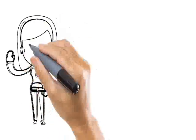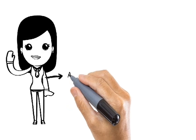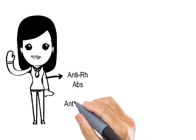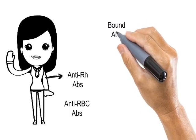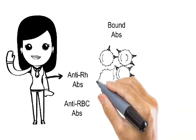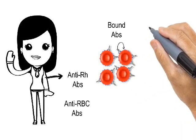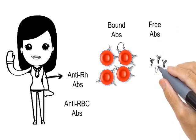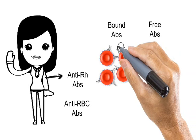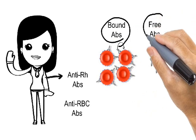Let us now look at the actual Coombs test. Consider one example: a woman is suspected to have produced anti-RH antibodies, that is, anti-RBC antibodies. If she has produced such antibodies, they will exist in two forms. The first form is bound antibodies — antibodies that have coated the surface of RBCs. The second form is free antibodies — antibodies not bound to the surface of RBCs.